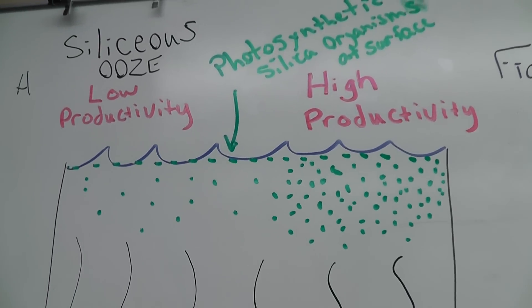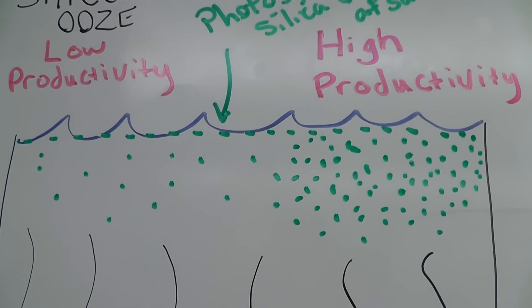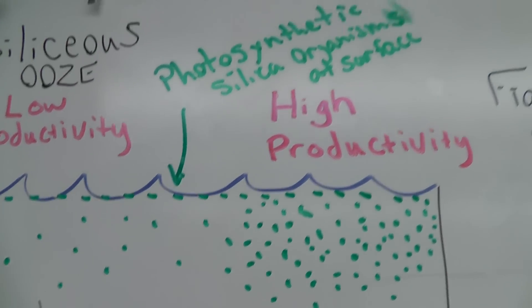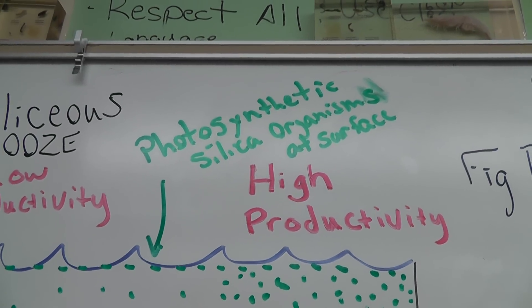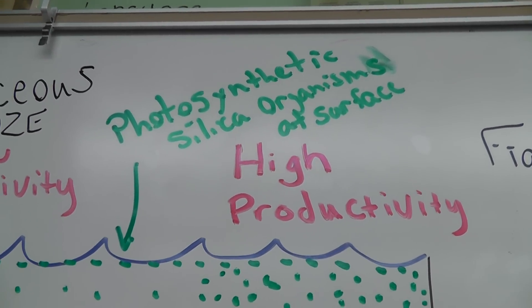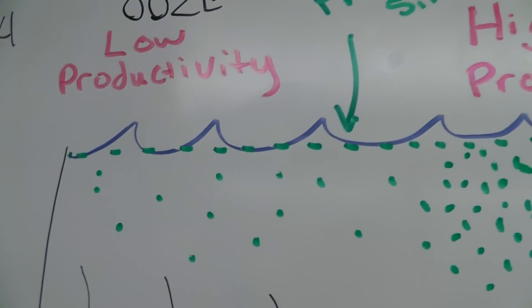we have a great amount of silica producing organisms at the surface and that is because a lot of them are photosynthetic which means that they require the sun. So of course they're going to exist at the surface.